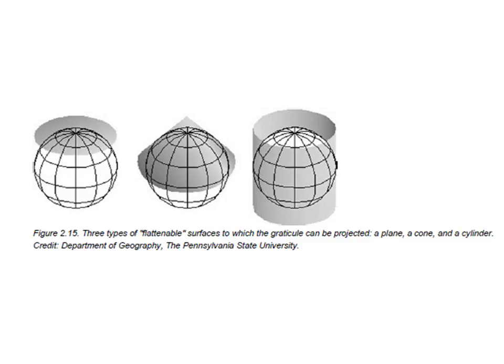There are three types of flattenable surfaces, which are quite common in terms of how we draw map projections. One is the planar, which is the one on the left. The second one is the conic. And the third one is the cylindrical.